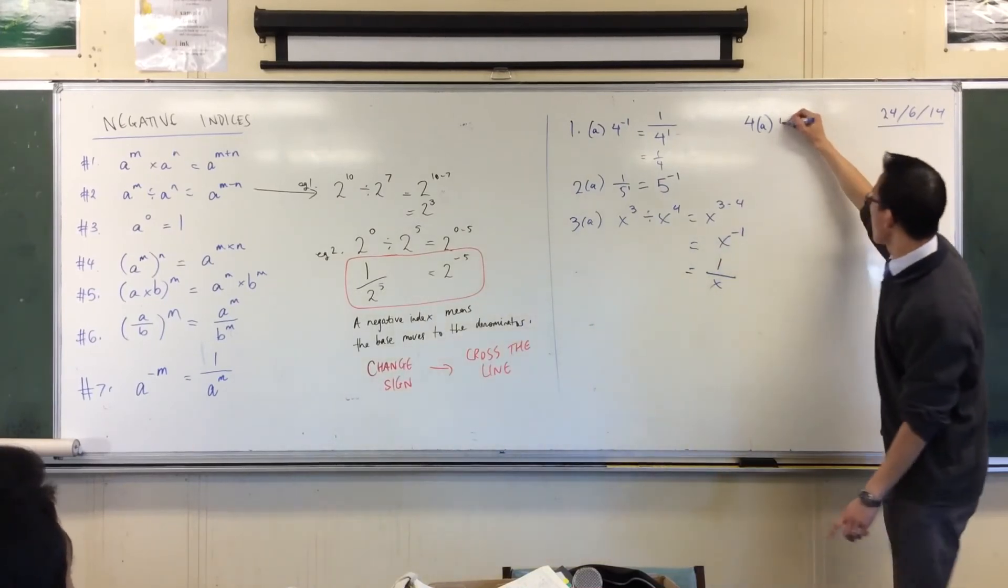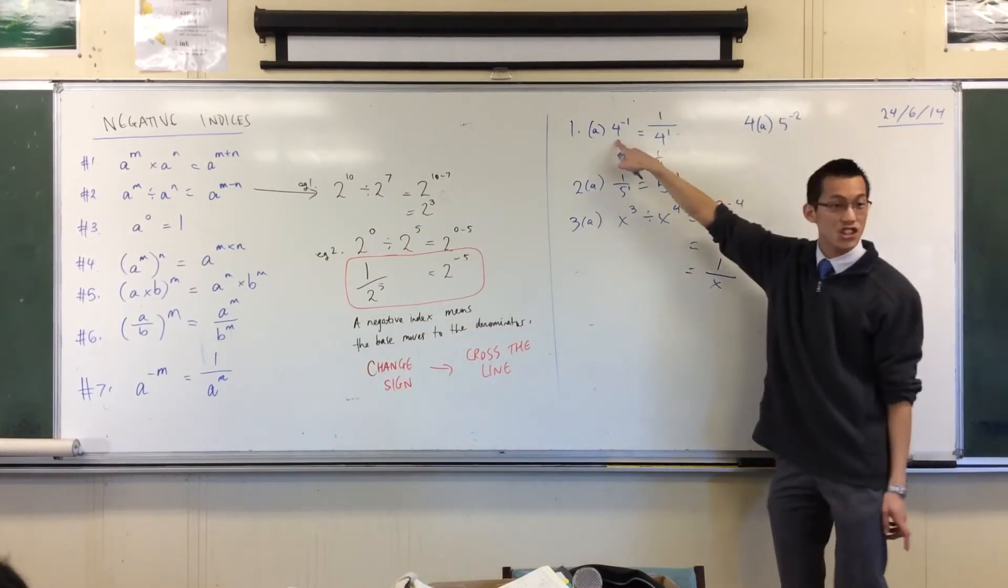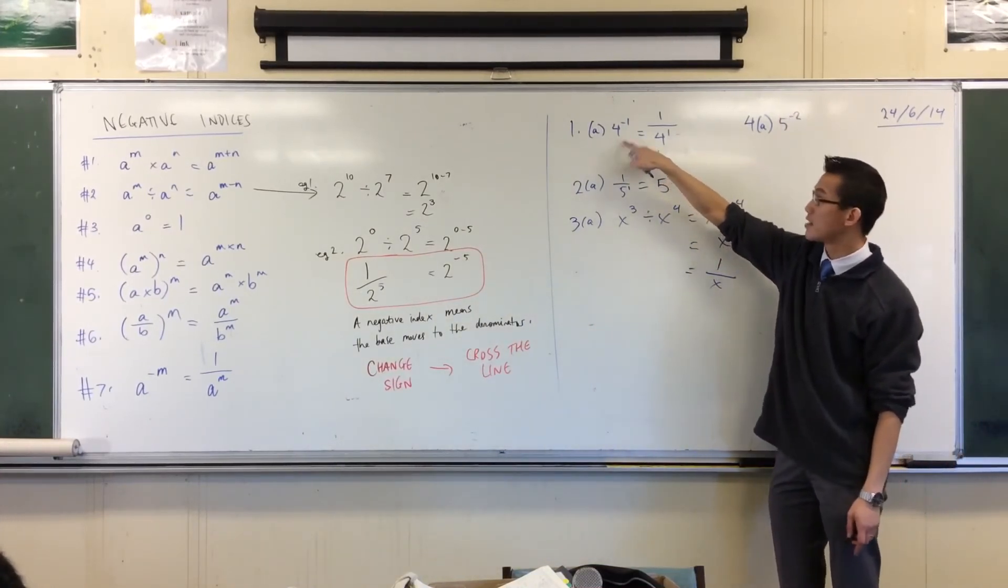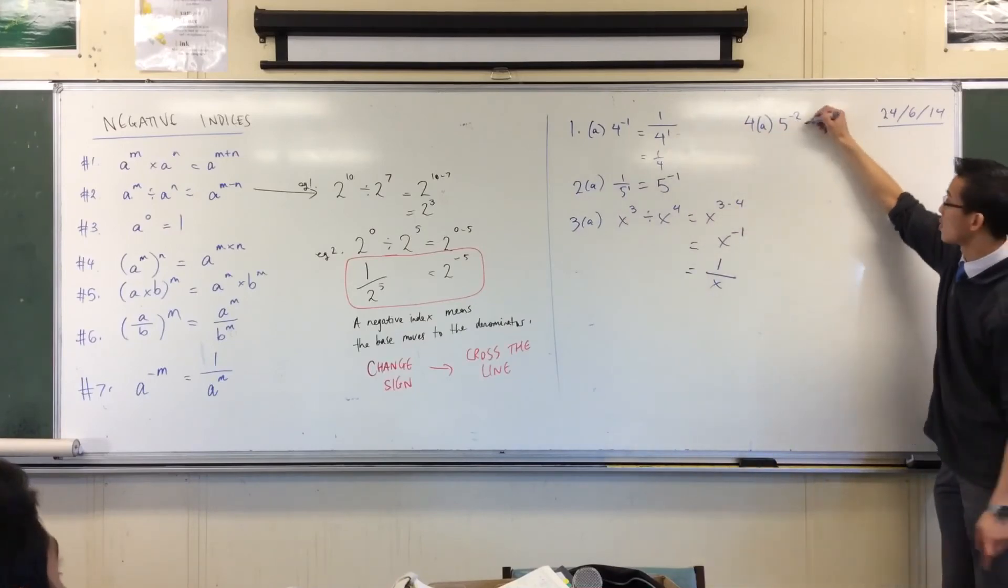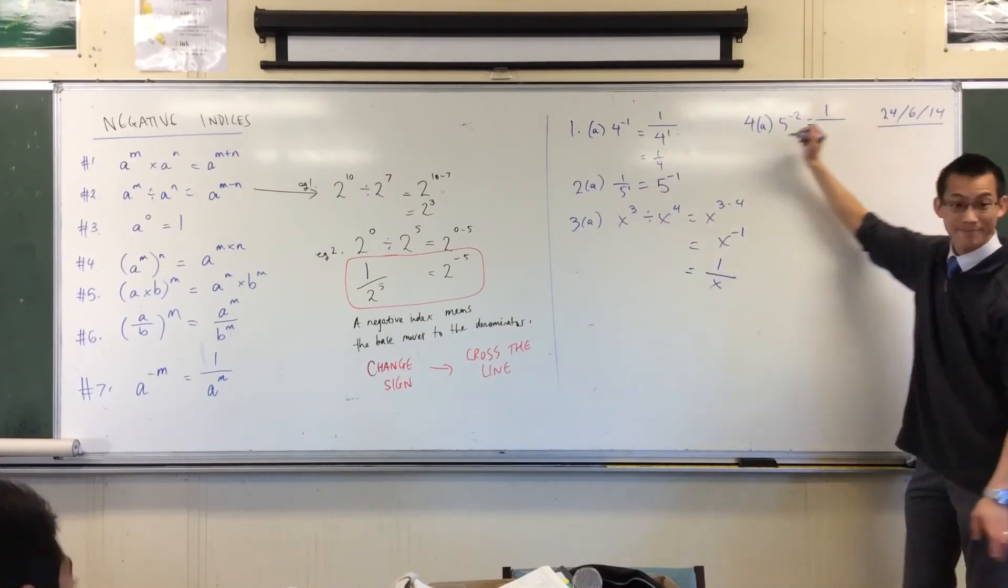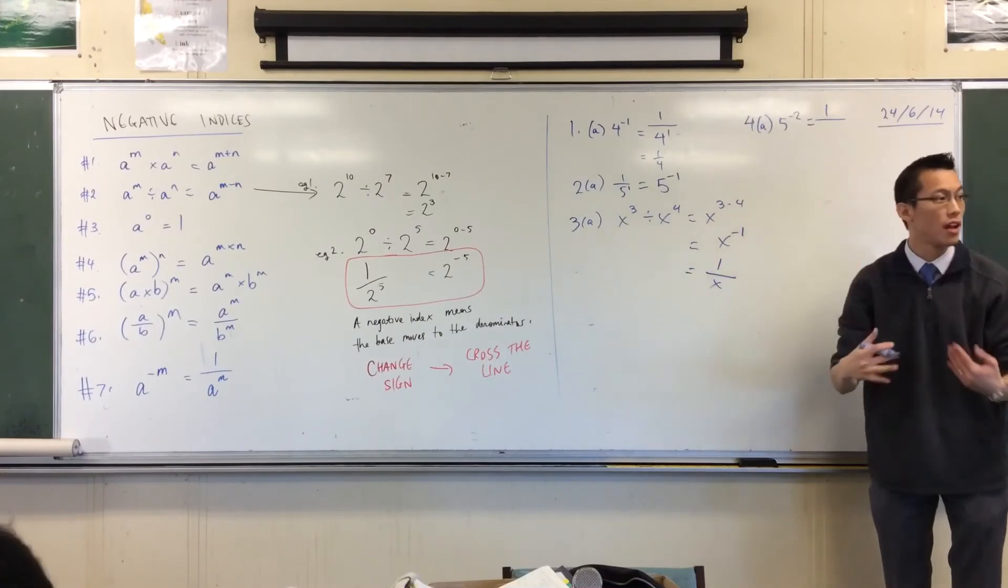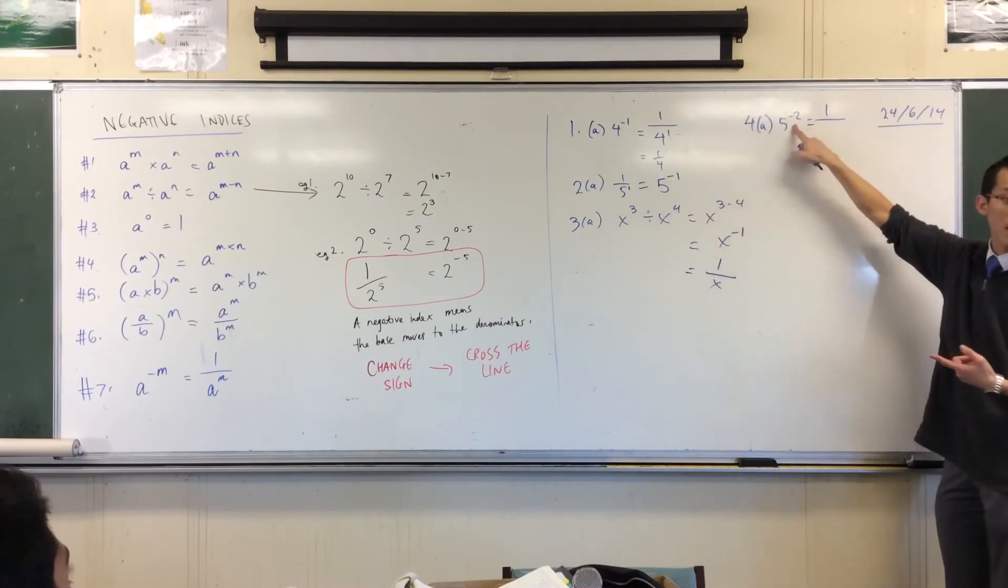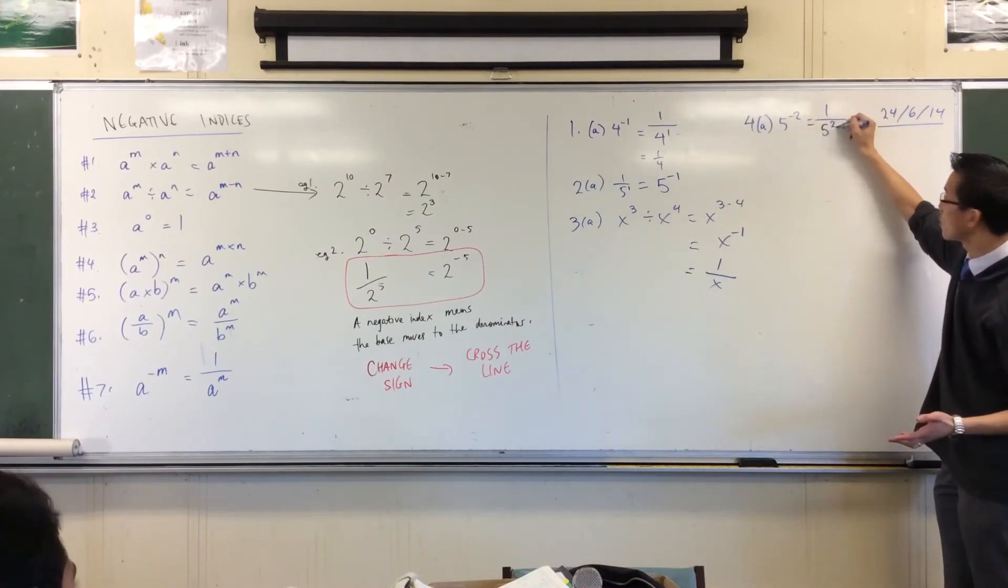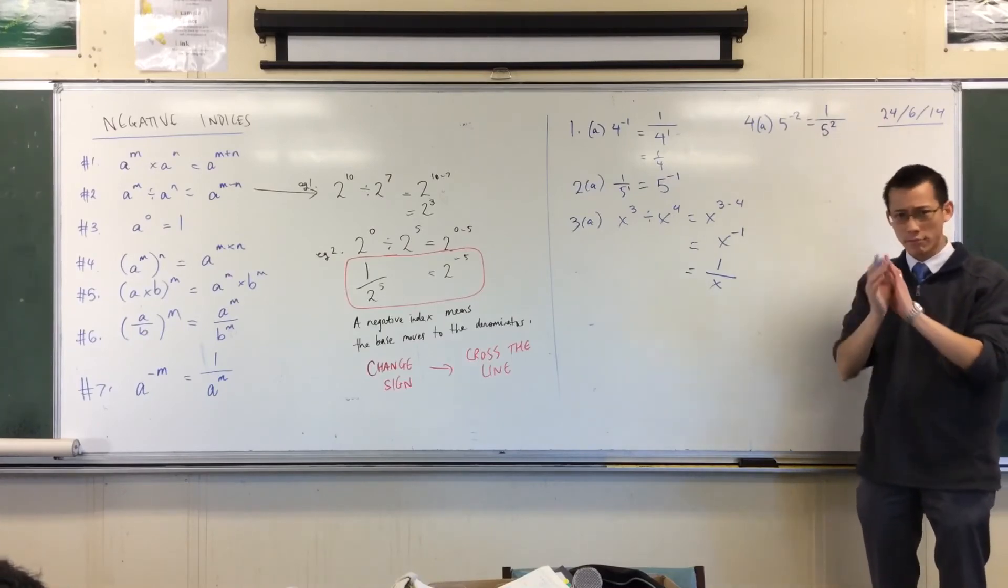Can you see it's just like this? It's a number with a negative index. I'm going to do the same thing to it. It's going to be 1 over. I've crossed the line, so I should change the sign. It'll be 5 to the power of 2, keeping that 2 there.